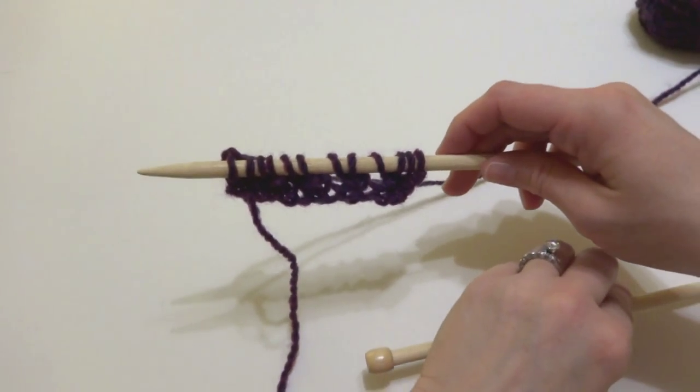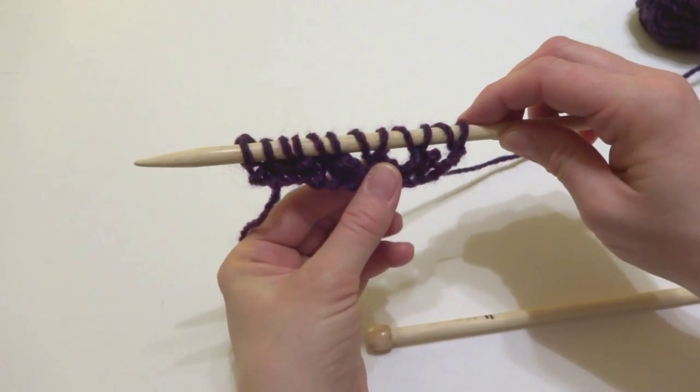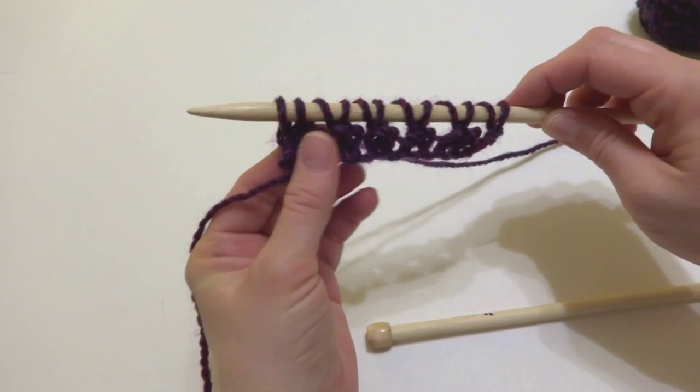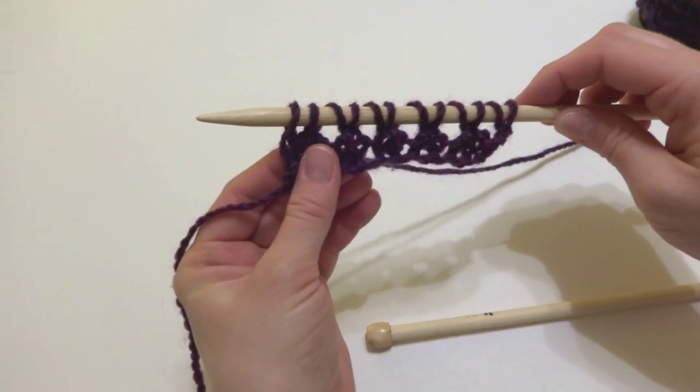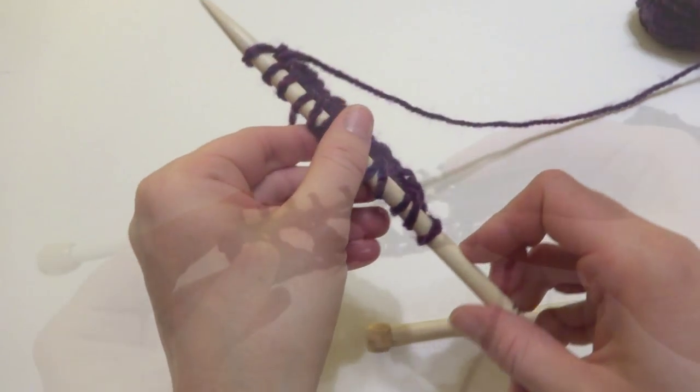So when you do this row, it doesn't really look like much. You can just start to see some of these eyelets forming. But if you go ahead and knit another row, you can start to see that.